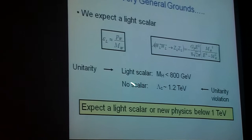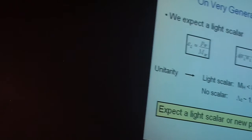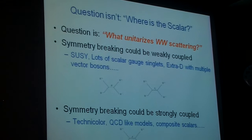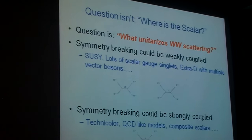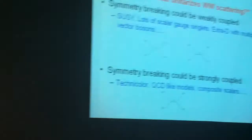So the question really isn't where is the scalar, but rather what unitarizes the WW scattering. So the symmetry could be weakly coupled, like supersymmetry, where you have lots of Higgses. You could have a lot of scalar gauge singlets here. The Higgs particle could be a series of Higgs particles, singlets here, and in fact this is particularly nice because the lightest could be a dark matter candidate. You could have extra dimension models with multiple vector bosons which unitarize the theory. Symmetry breaking could be strongly coupled, and it could be something like a Techni-Rho here. So there are lots of possibilities here.